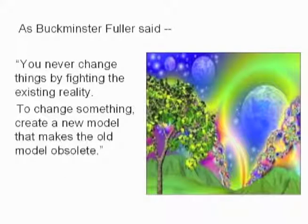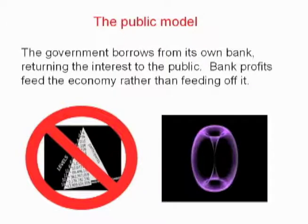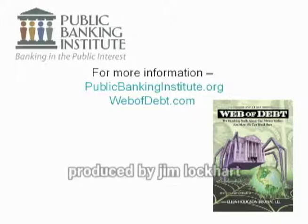Buckminster Fuller said: you never change things by fighting the existing reality. To change something, create a new model that makes the old model obsolete. The public banking model is that the government borrows from its own bank, returning the interest to the public — a sustainable system where bank profits feed the economy rather than feeding off it. For more information, visit publicbankinginstitute.org, or my own website www.webofdebt.com, where I have over 150 articles written on this subject.